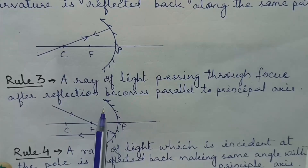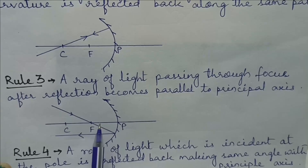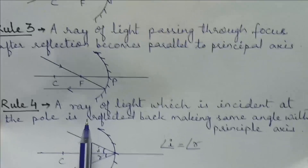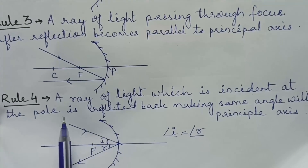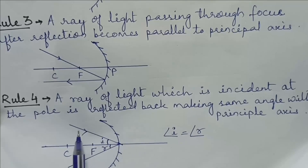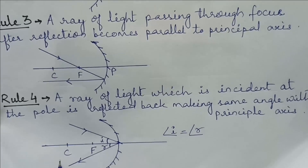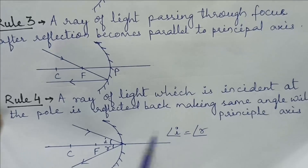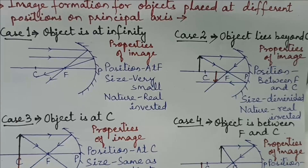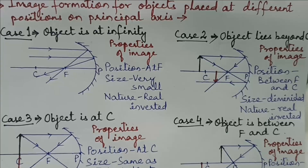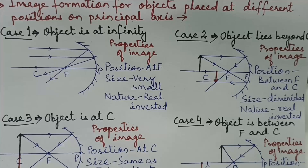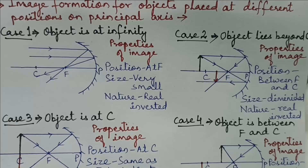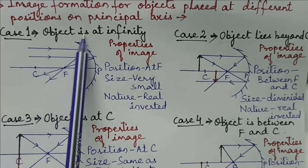Notice that rule number 1 and rule number 3 are opposite to each other. Rule 4: A ray of light which is incident at the pole is reflected back making the same angle with the principal axis, i.e., angle of incidence is equal to angle of reflection. Now let us find out the position of image for object placed at different positions on the principal axis. We need to consider the rays from the top of the object, and we need to take 2 rays for the formation of image.